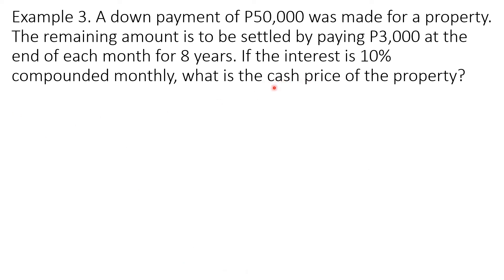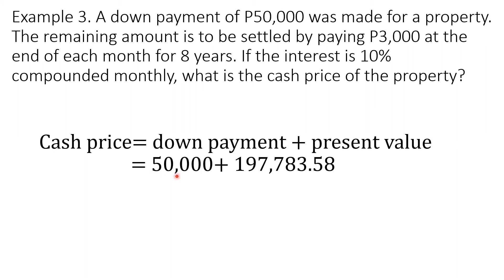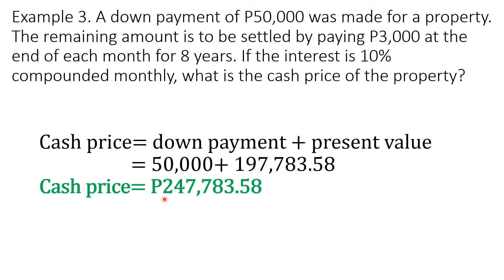Since we are asked for the cash price, we use the formula: cash price equals down payment plus present value. The down payment given in the problem is P50,000, plus the present value of P197,783.58. Therefore, the cash price is P247,783 pesos and 58 centavos.